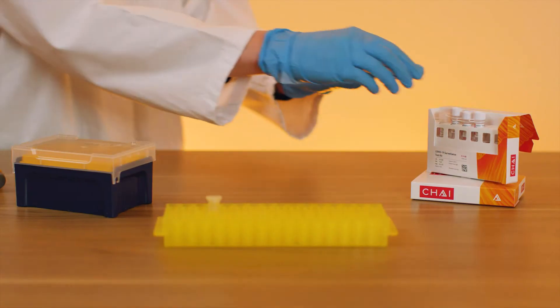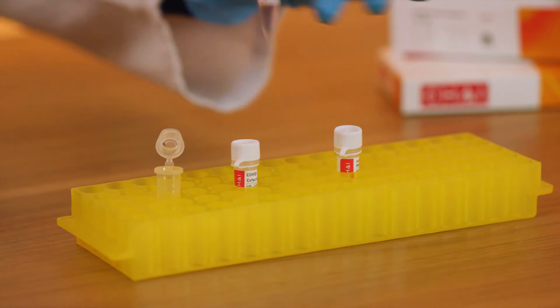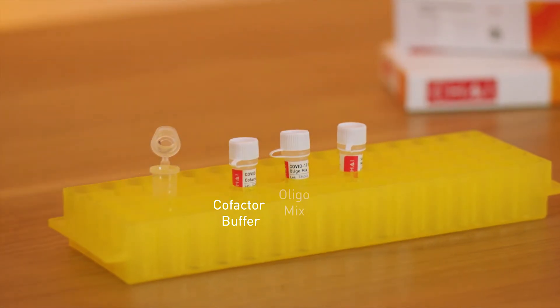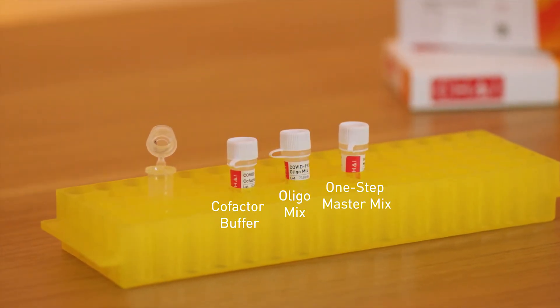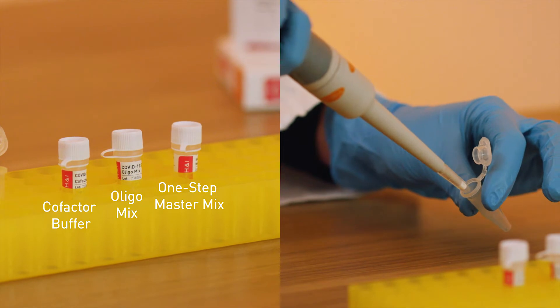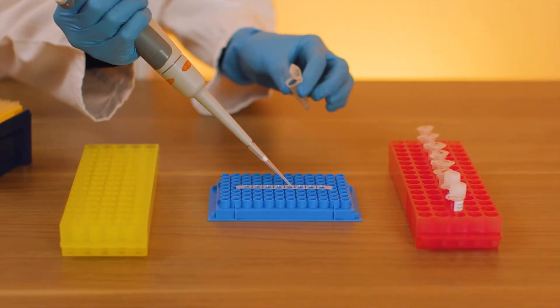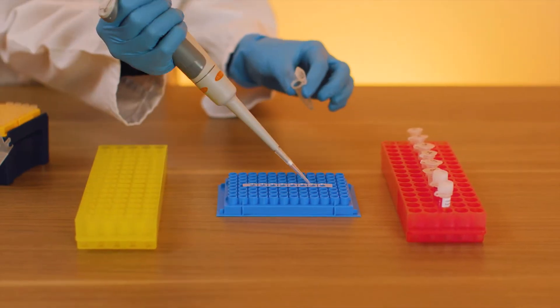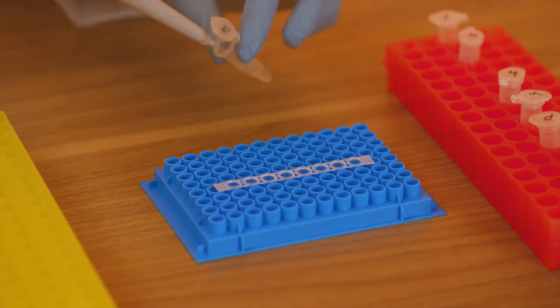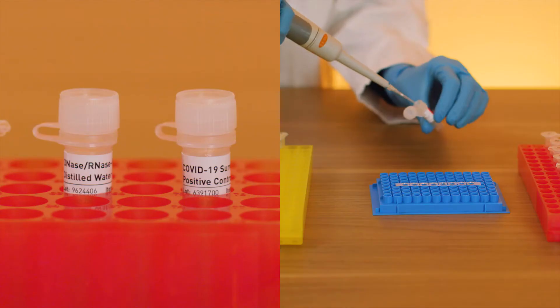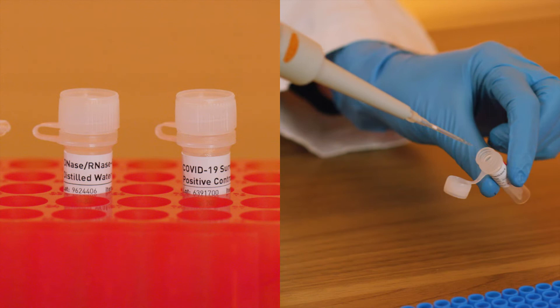Next, prepare the PCR reaction mix by combining the cofactor buffer, oligo mix, and one-step master mix into a new 1.5 milliliter tube. Distribute the reaction mix evenly into PCR tubes, then add the samples, then add negative control and positive control.